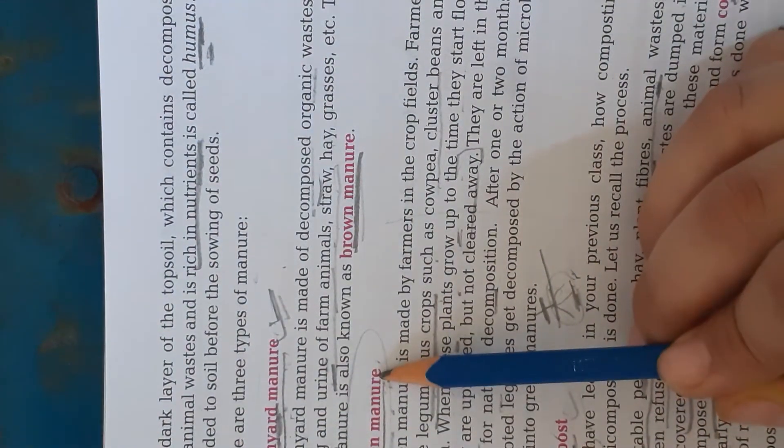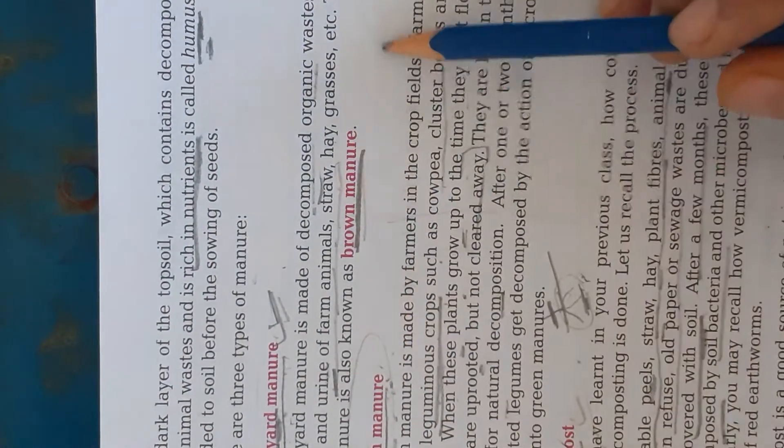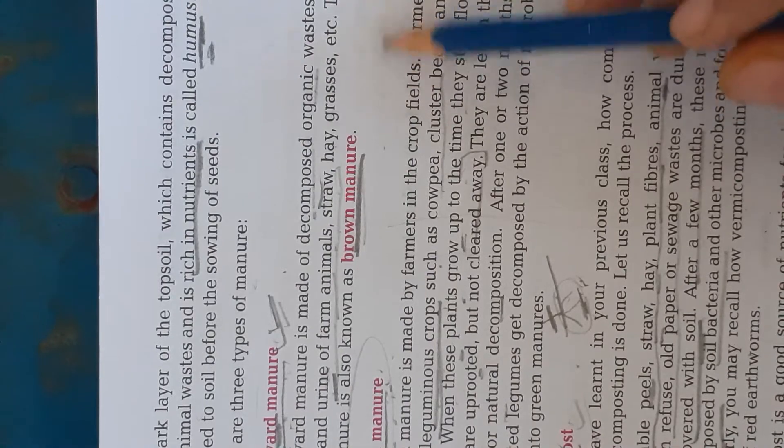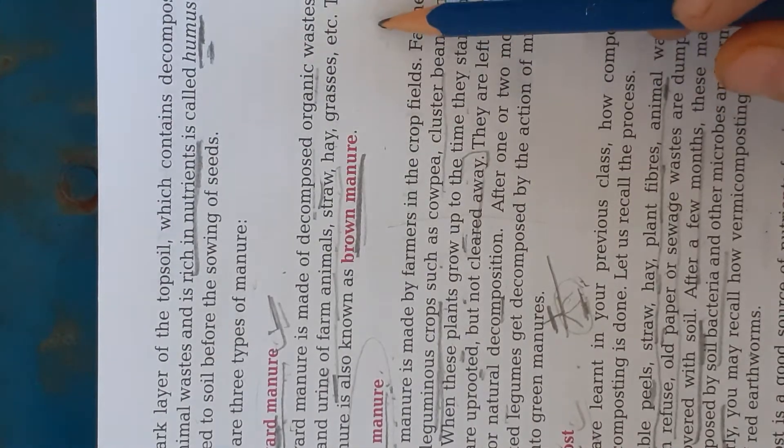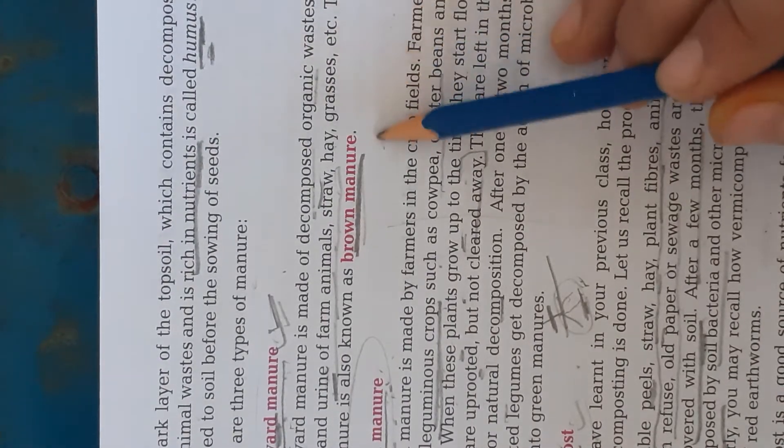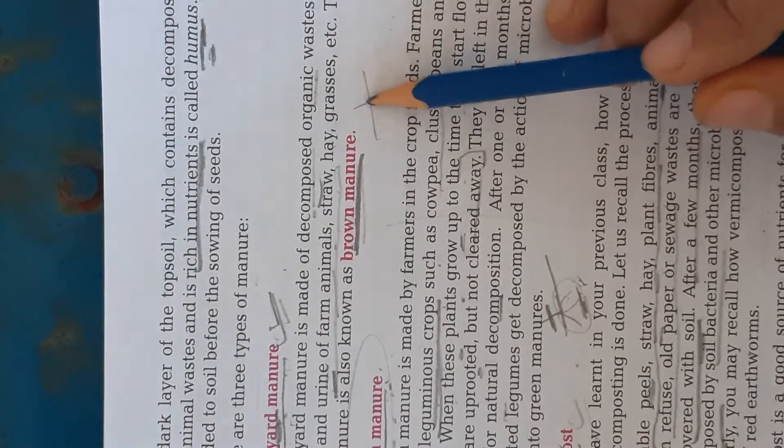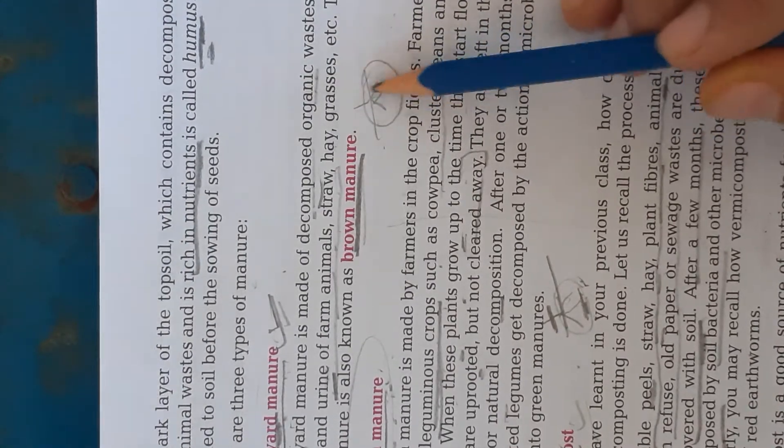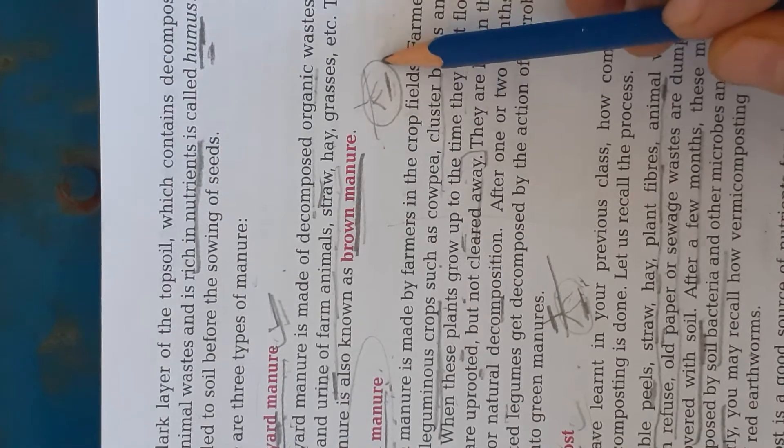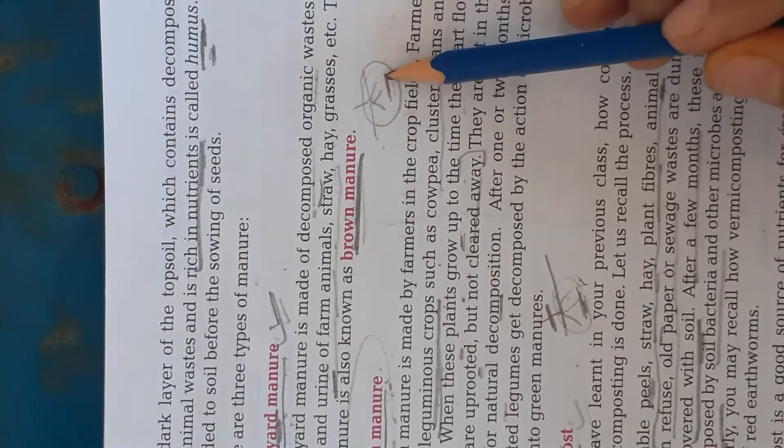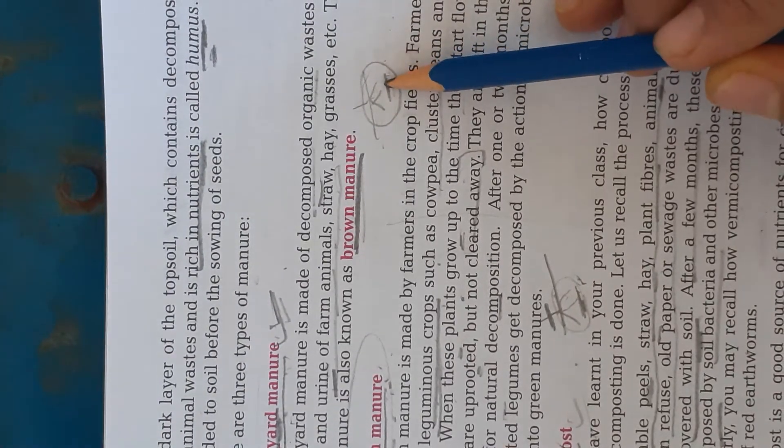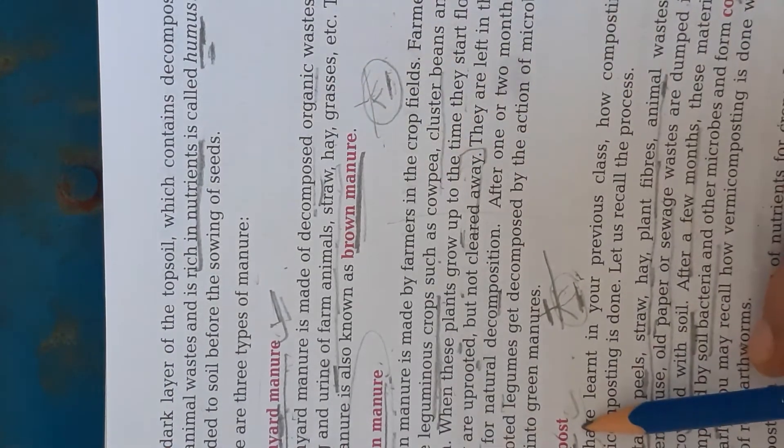Next, green manure. I have told you that the leguminous crops are not cut from the root. They are cut above the root. The roots are present in soil and they start decomposing with the help of bacteria and act as a manure.